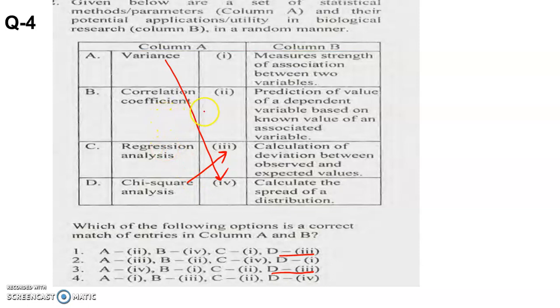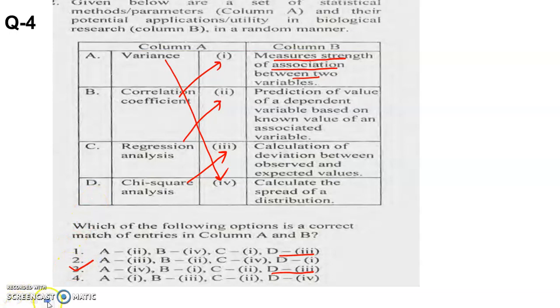Correlation coefficient measures the strength of association between two variables. Regression analysis is the prediction of values of a dependent variable based on the known values of an associated variable. So the answer is 3.